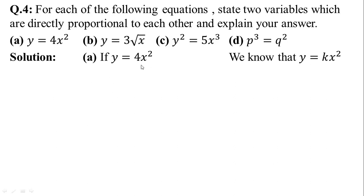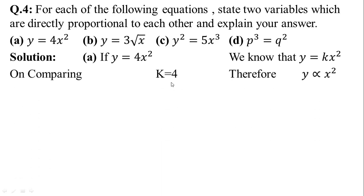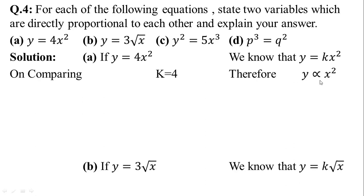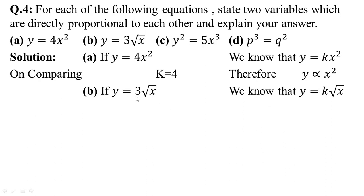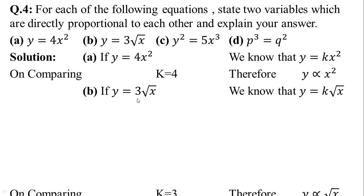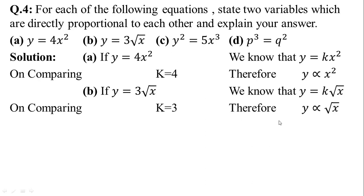If y is equal to 4x squared, we know that y is equal to kx squared. Comparing both equations, we find k is equal to 4. Therefore, y is directly proportional to x squared. In part b, y is equal to 3 times square root of x. We know that y is equal to k times square root of x. On comparing, k is equal to 3. Therefore, y is directly proportional to the square root of x.